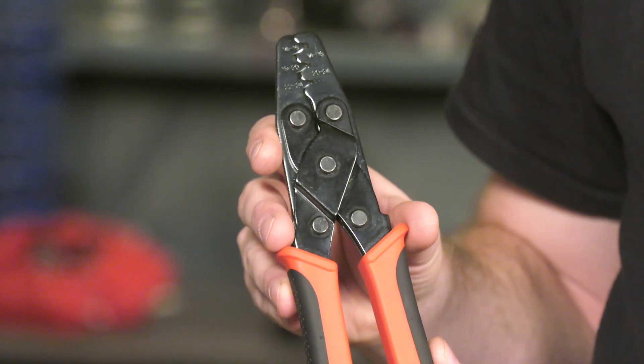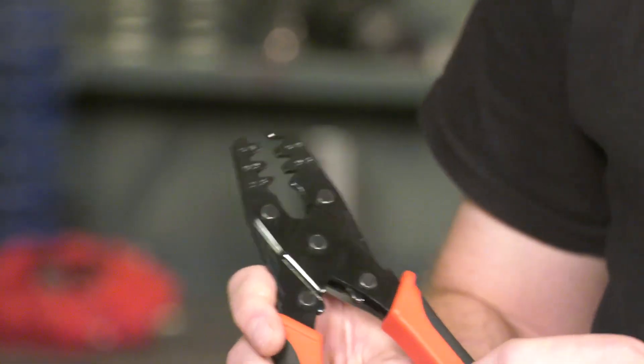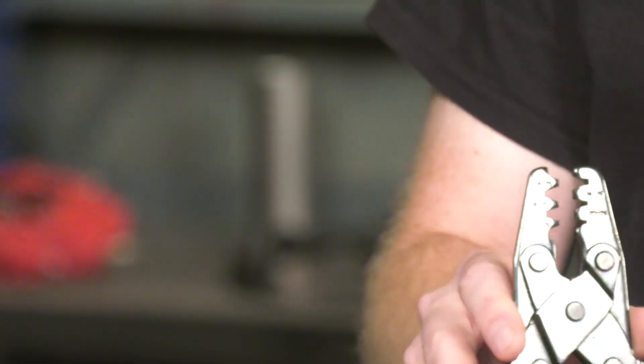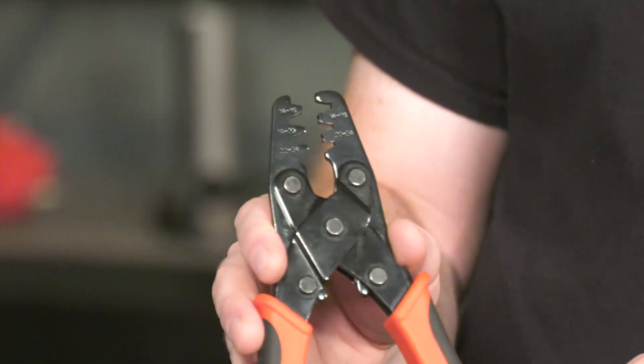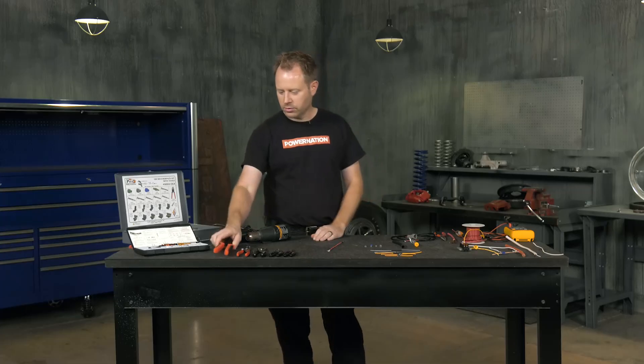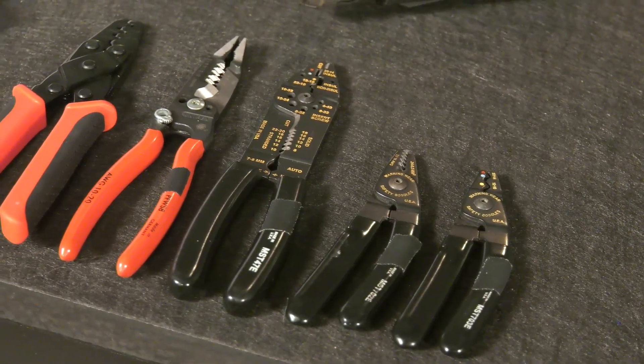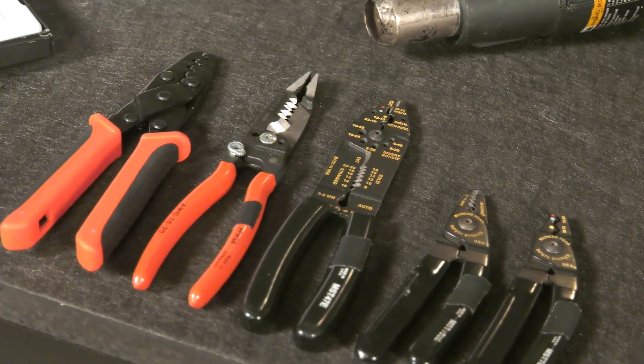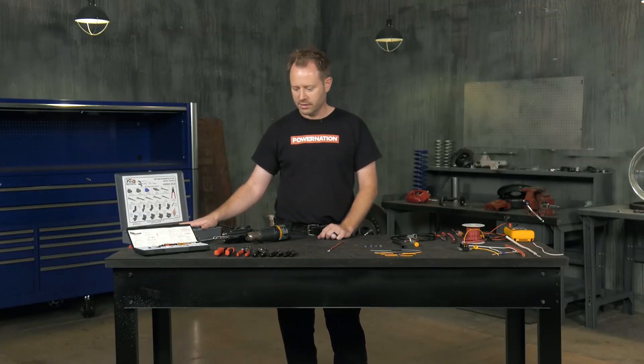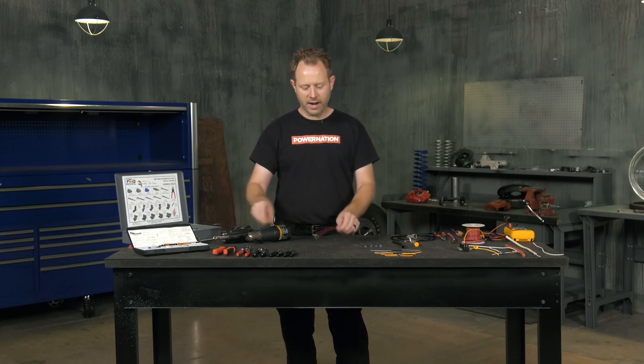So to get quality crimping done like you get from the factory, you need the correct crimping tools. Now this crimper right here comes in our little kit that we have, especially for these weather pack connectors. The dies are made for these terminals, for the size, for the wire, and it has the right crush needed to make that proper connection. Depending on your type of connectors, that's going to dictate which crimping tool you need for that factory finish.